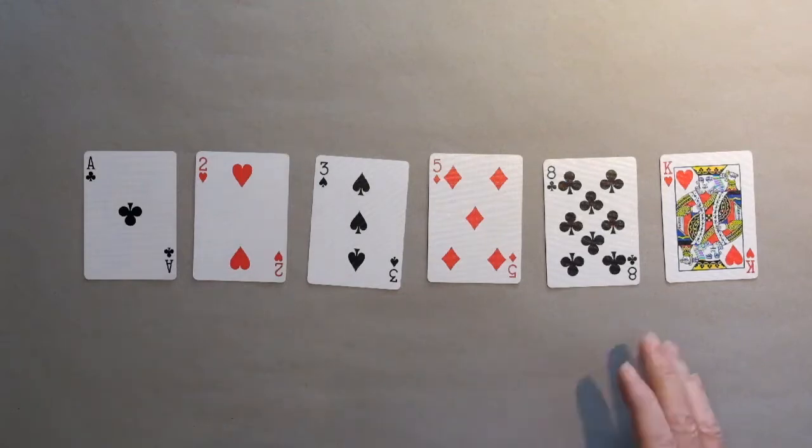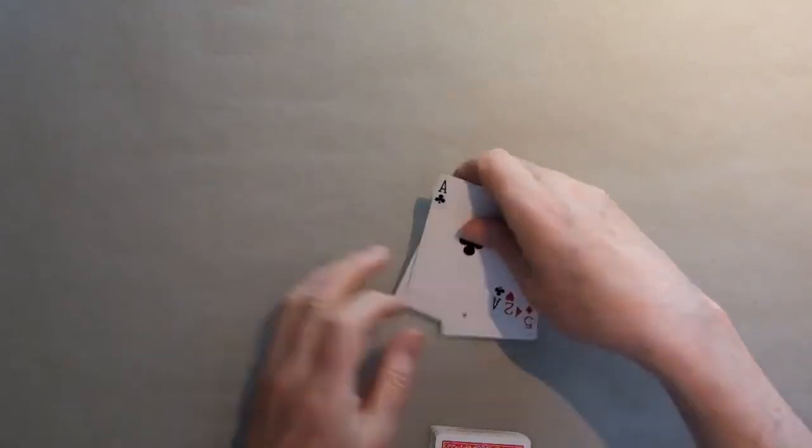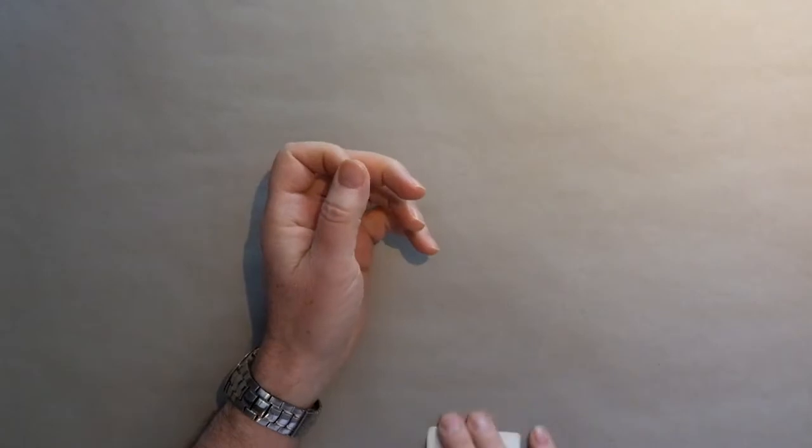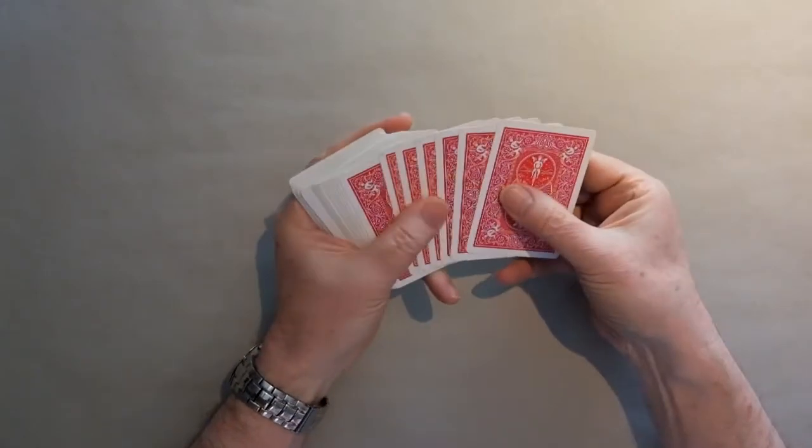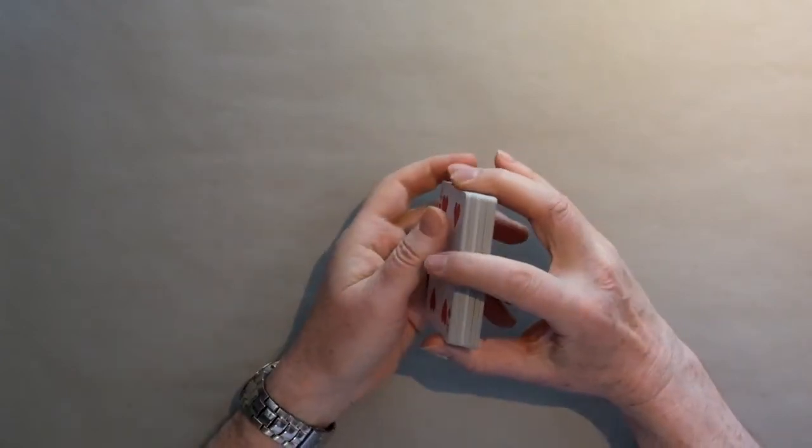So, to do the trick, you just need to get these six cards. They can be in any order. And put them on top of your deck of cards. So, they're right there. And then you find two spectators, and off you go.